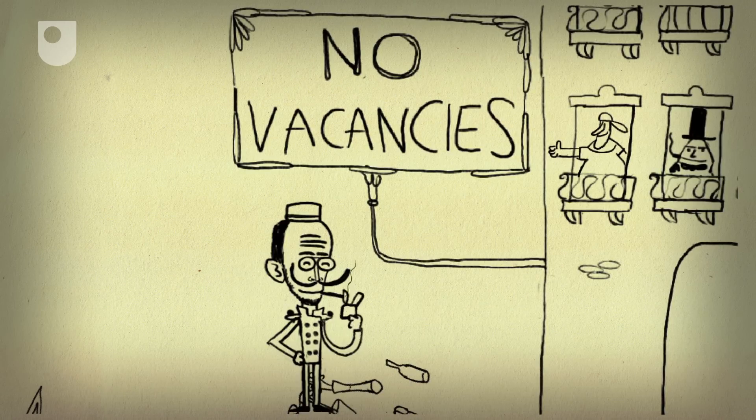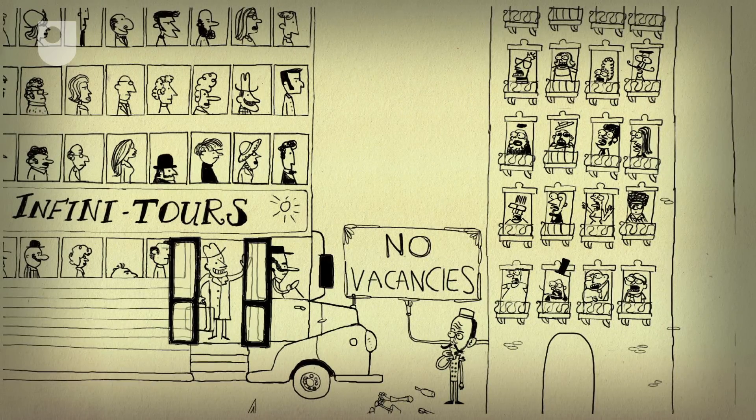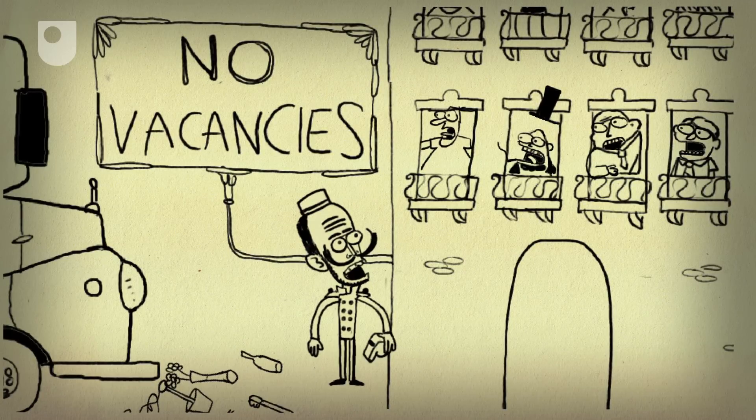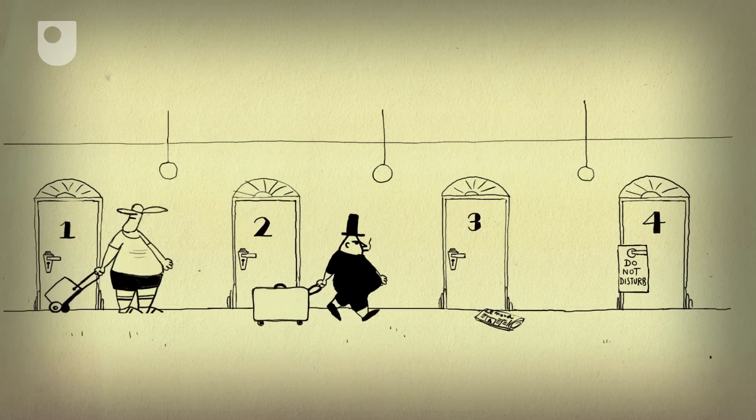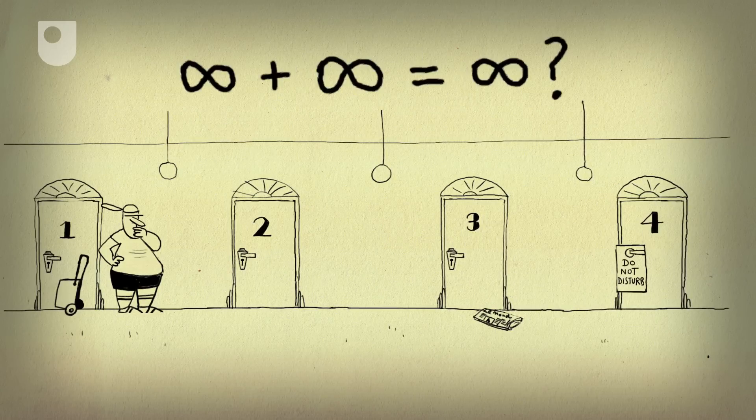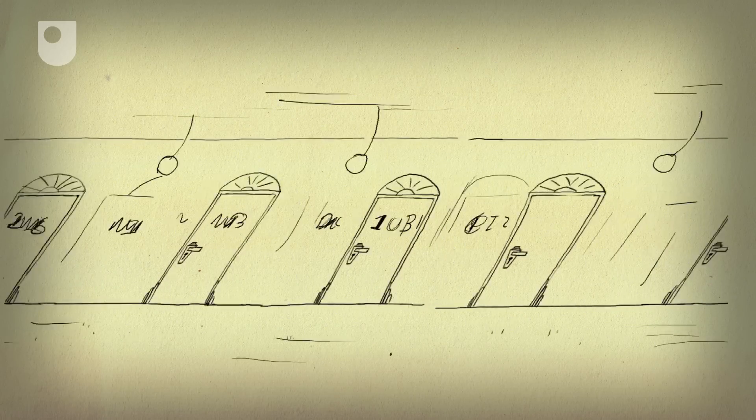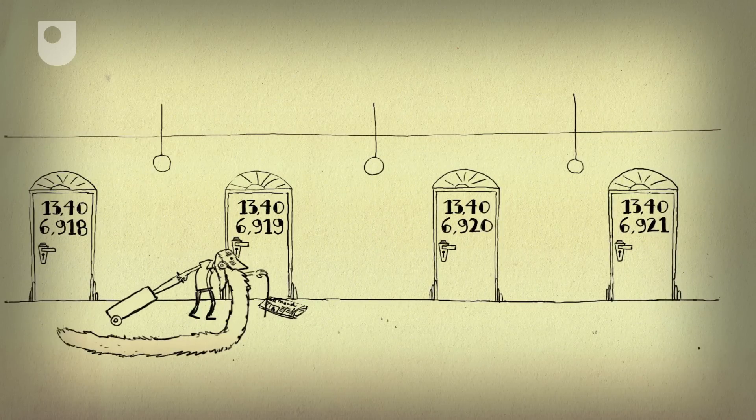But what about when a coach containing an infinite number of new guests pulls up? Surely he can't accommodate all of them. Hilbert frees up an infinite number of rooms by asking the guests to move to the room number which is double their current one, leaving the infinitely many odd numbers free. Easy for the guest in room 1, not so easy for the man in room 8,600,597.